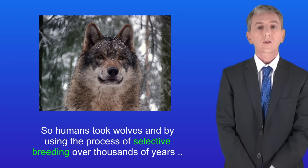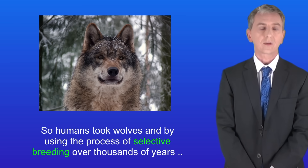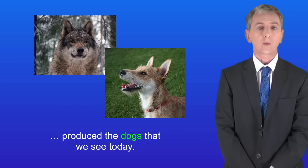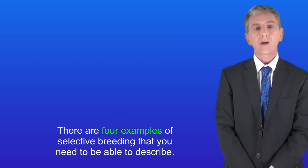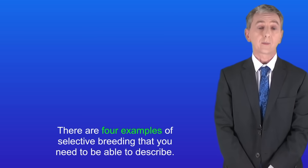So humans took wolves and by using the process of selective breeding over thousands of years produced the dogs that we see today. There are four examples of selective breeding that you need to be able to describe.